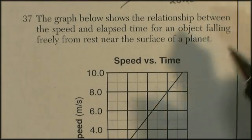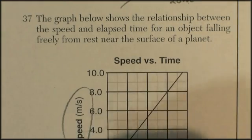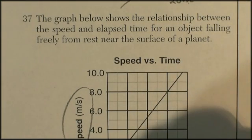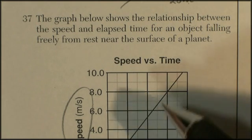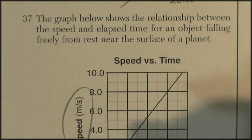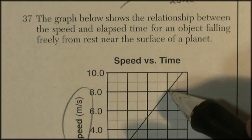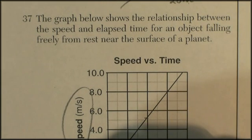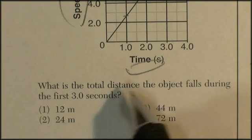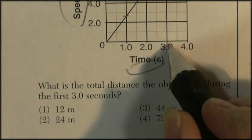Question 37. The graph shows the relationship between the speed and the elapsed time for an object falling from rest near the surface of the planet. So in 1 second, its speed has increased to about 2 something. 2 seconds has increased to 4 something. So definitely not the Earth. If this was the Earth, it would have increased by 10 meters per second every second. So what do they want to know? What is the total distance the object falls during the first 3 seconds?